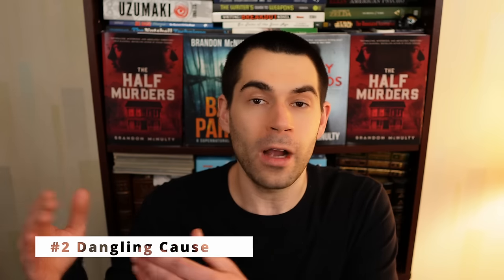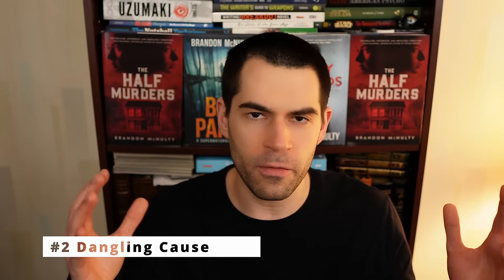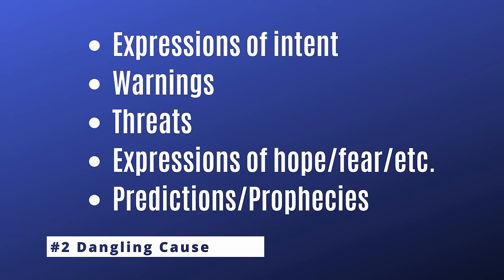Going back to that example of the man asking out the woman — you can have the effect come later if you switch the scenario up a little. Instead of having him walk up and ask her directly, have him send her a text message. Then the effect doesn't have to be immediate; there could be a period where other events occur, and then we get the answer later. If you're looking for inspiration, consider things like an expression of intent, a warning, a threat, an expression of hope or fear, or a prediction.